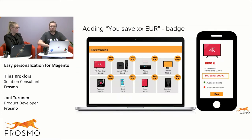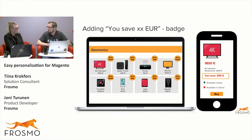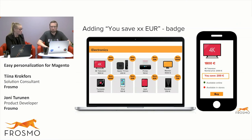The second example is adding a 'You can save up to X euros' indicator. When you have a discounted product, you can already see the normal price and discounted price, but the difference isn't visually prominent and it's not easy for Magento to add natively. So the experiment was: if you add a 'Save 200 euros' badge to the product, does it increase the conversion rate? This works in both desktop and mobile view, and Frosmo handles the calculation.